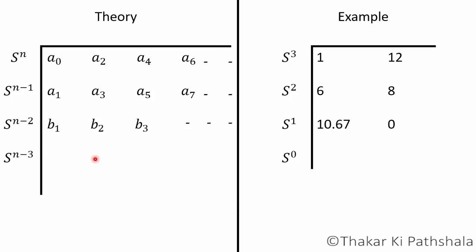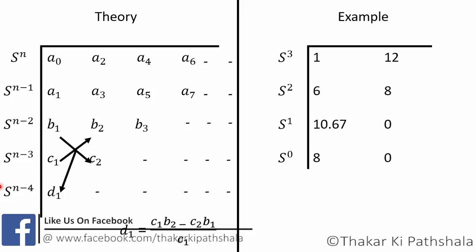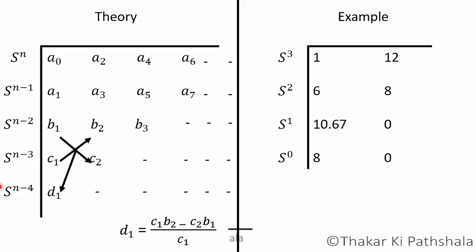But here we can proceed further so we can get the value of c₂. The value of c₂ will be multiplication of b₁ and a₅ minus multiplication of a₁ and b₃ divided by b₁. If we decrease the order of s by 1 we can get the value of d₁ also. So the value of d₁ will be like multiplication of c₁ and b₂ minus multiplication of c₂ and b₁, whole divided by c₁. So we are limiting our array up to here. If you have more values you can proceed further as I have shown earlier. We have done all this exercise in order to find out the ultimate stability of the system. So just one step is remaining.